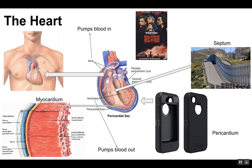The septum is the dividing wall between the right and left sides of your heart. Think of it like a border wall — it divides your heart into right and left halves. The septum prevents the mixing of oxygen-rich and oxygen-poor blood.